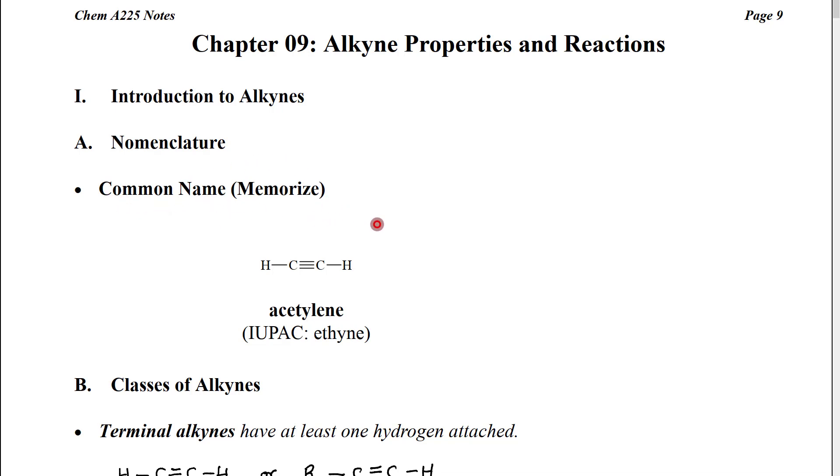The only common name that we need to know for alkynes is the name of this molecule, which is the smallest alkyne you can have. It's a 2-carbon alkyne.